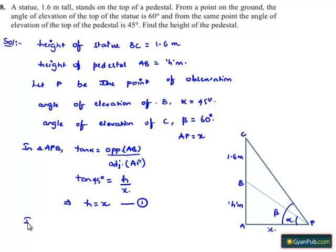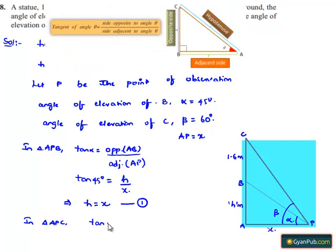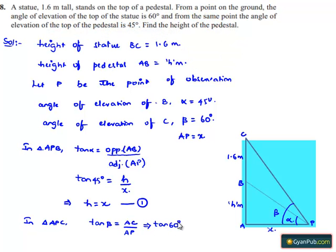Now, considering triangle APC: tan(beta) equals the opposite side AC divided by the adjacent side AP. Which implies tan(beta), that is tan(60°), equals AC divided by AP. AC from the figure is nothing but H plus 1.6, divided by AP which is X.